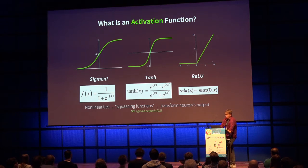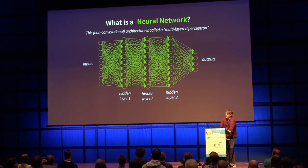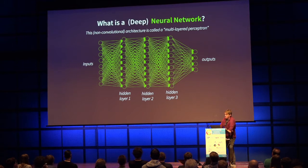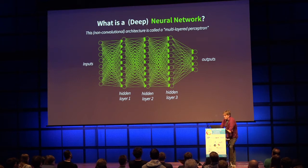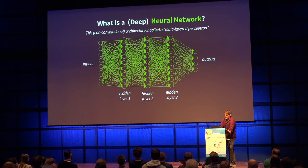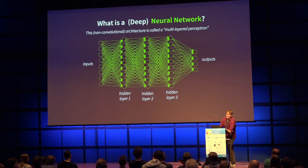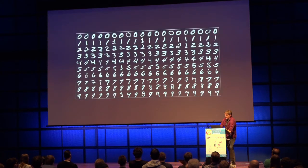A neural network is just many neurons where the output of one neuron becomes the input to the next layer. A deep neural network has more than one hidden layer. Common architectures like ResNet have on the order of hundreds of layers. We have inputs, multiply with weights, sum them up, add a bias, apply the nonlinearity, and that output becomes the input to the next layer. If you look at MNIST digits, there's quite a lot of variety in how they're drawn.